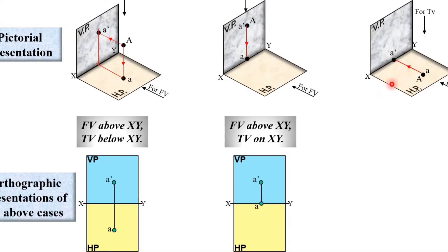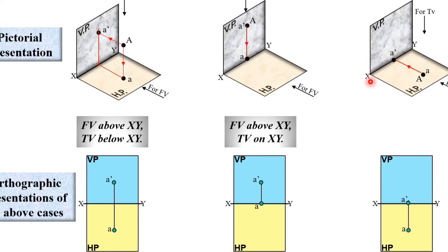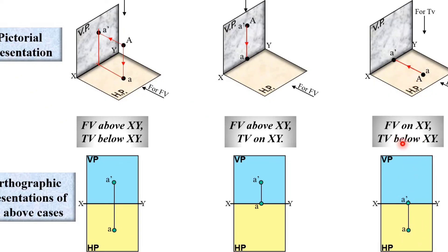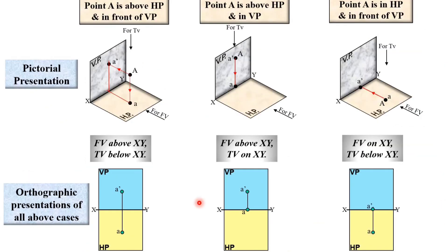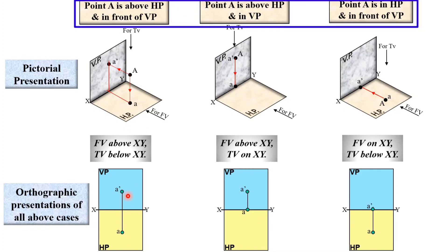Can you imagine what the orthographic presentation for Case 3 should be? Yes, very simple: A dash is on the XY line. The HP must be rotated clockwise by 90 degrees, so point A will move below the XY line. In this case, the front view A dash is on the XY line and the top view A is below the XY line. In the examination, this type of description is given to you and you have to draw the projection of the point like this.